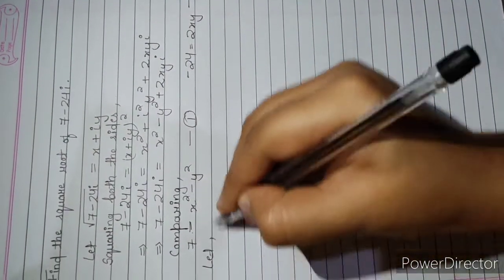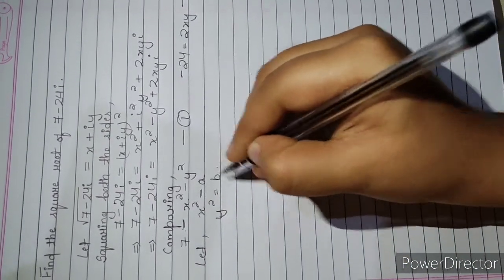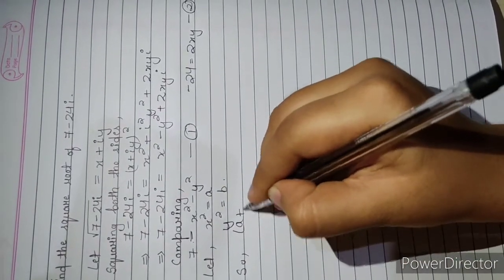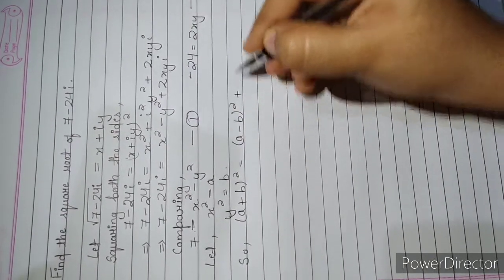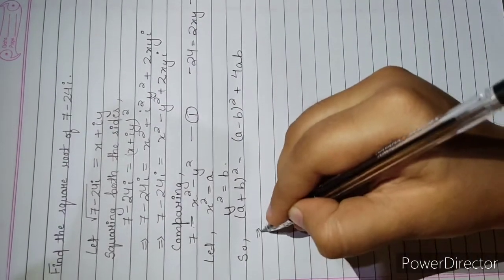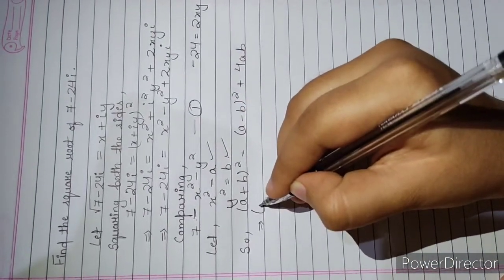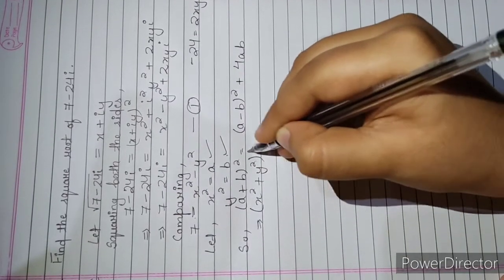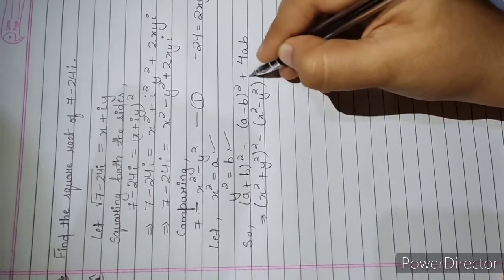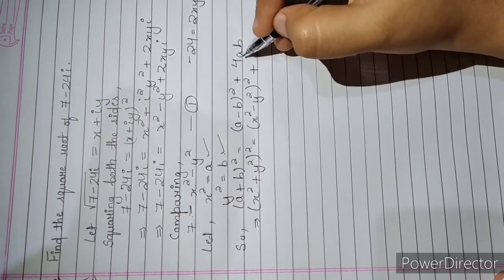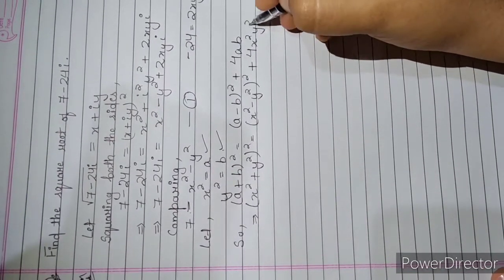Let us take x squared equals a and y squared equals b. We know that (a + b)² equals (a - b)² plus 4ab. Since a equals x squared and b equals y squared, we can write: (x² + y²)² equals (x² - y²)² plus 4x²y².